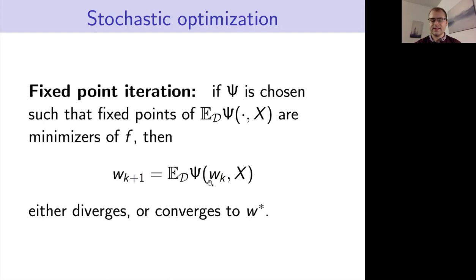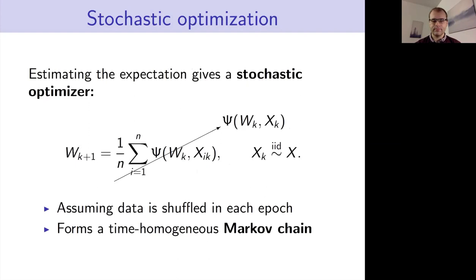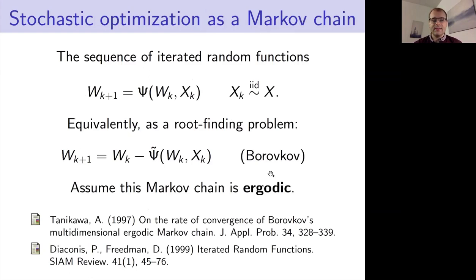In practice, this expectation may be too expensive to compute, so we take a Monte Carlo approximation — some average where we sample over the data independently. We assume the process is time-homogeneous with all hyperparameters fixed and data shuffled at every epoch. We can simplify by writing this average as a map psi in terms of a random vector sampled from the dataset, giving us a time-homogeneous Markov chain constructed as a sequence of iterated random functions.